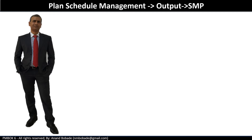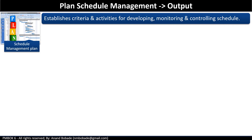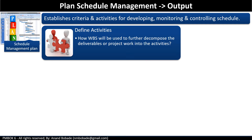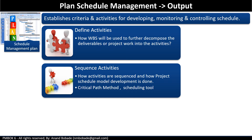There is only one output: the schedule management plan. It establishes criteria and activities for developing, monitoring, and controlling the project schedule. The plan explains how each process will be done. In define activities, it explains how the work breakdown structure will be used to further decompose deliverables into activities. In sequence activities, it explains how activities are sequenced and how project schedule model development is done. It also explains the scheduling methodology — such as critical path method — and scheduling tools like Microsoft Project to be used. Note that the term 'project schedule model' simply means the project schedule is not written in stone; it can be changed.